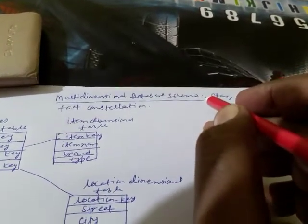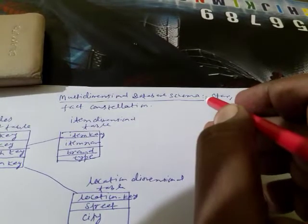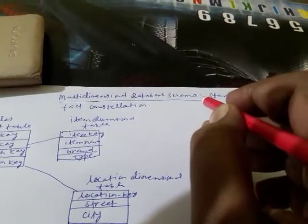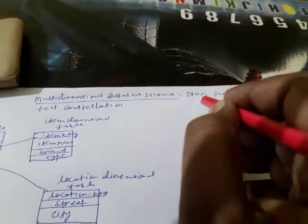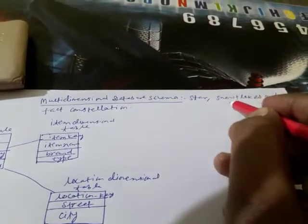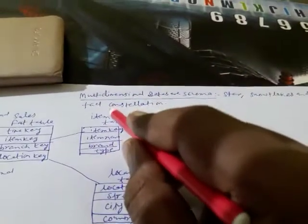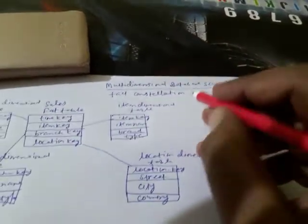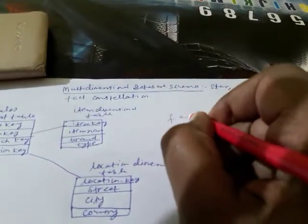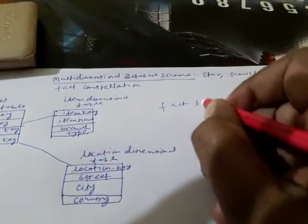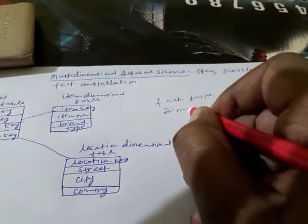For data warehousing and OLAP, we go for different types of schemas. The first one is the star schema, then the snowflake, and then the fact constellation. Before that, we need to learn what is the meaning of the fact table and what is the meaning of the dimension table.